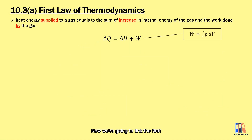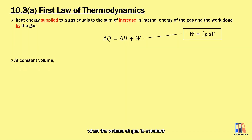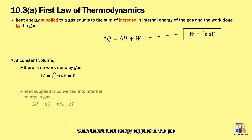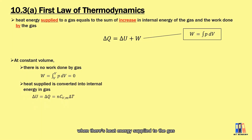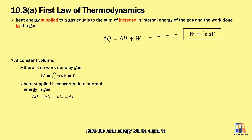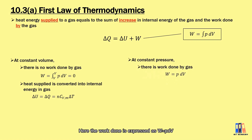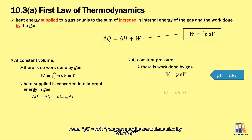Now we're going to link the first law of thermodynamics to the molar heat capacity. The first case is when the volume of gas is constant. As mentioned, there is no work done by the gas, so when heat energy is supplied, it is entirely converted into the internal energy of the gas. The heat energy equals nC_VM multiplied by the change in temperature. The next case is when the pressure is constant — now there is work done by the gas, expressed as P dV, or alternatively as nR ΔT from PV = nRT.